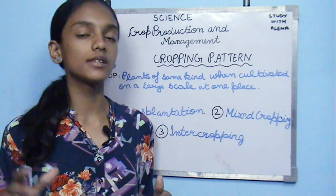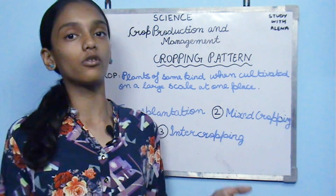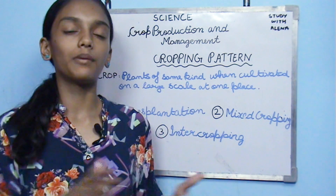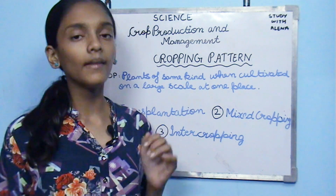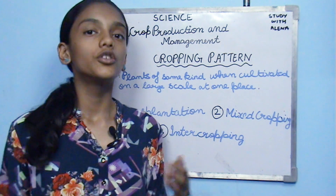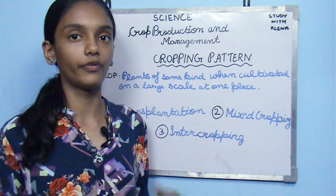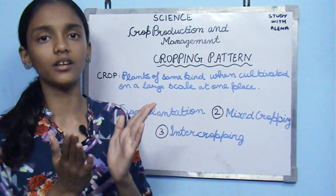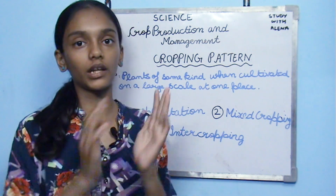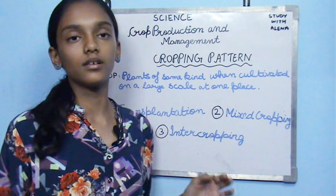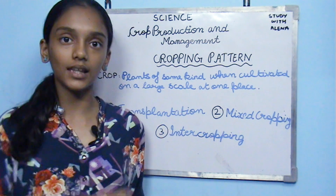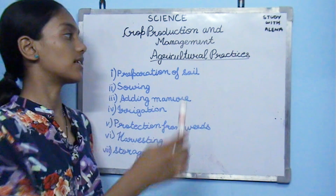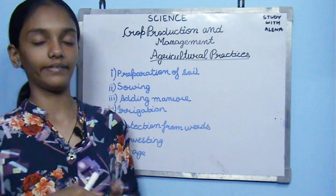The second pattern is mixed cropping and the third is intercropping. In intercropping, rows are made in the field and different plants are grown in separate rows — for example, Plant A in row one and Plant B in row two. In mixed cropping, seeds of different plants are mixed together and scattered across the field, so plants like wheat and mustard grow together randomly.